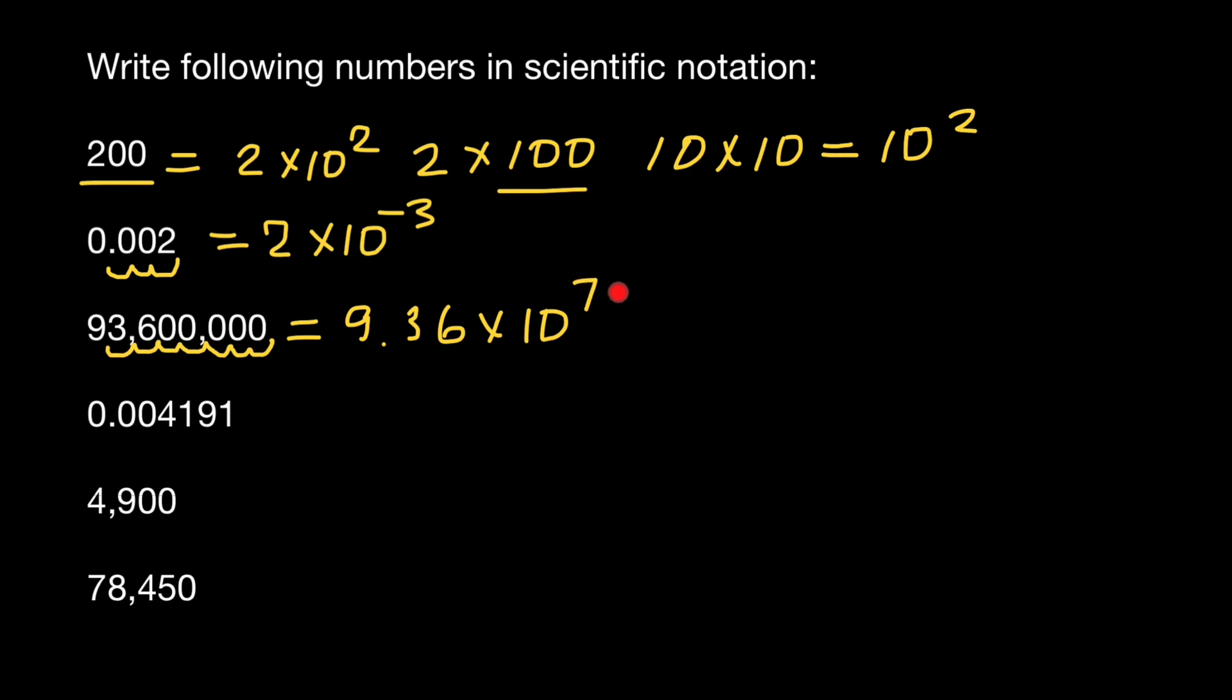This number is bigger than 1, so the power is positive. This number is smaller than 1, so the power is going to be negative. Let's move this decimal point to the right 1, 2, 3 times. And we are going to get 4.191 times 10 to the power of negative 3.